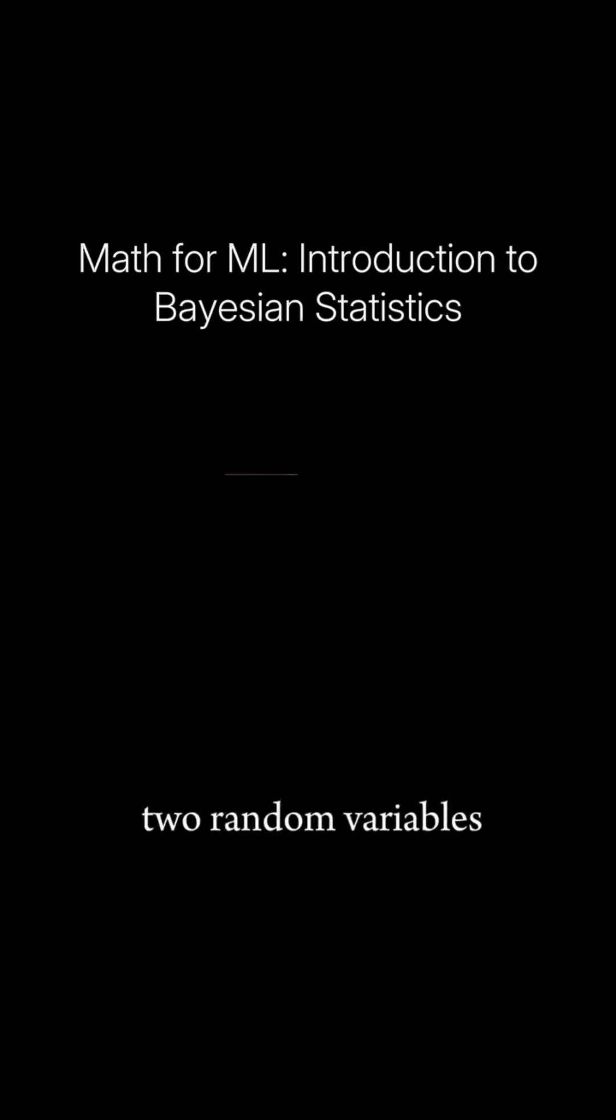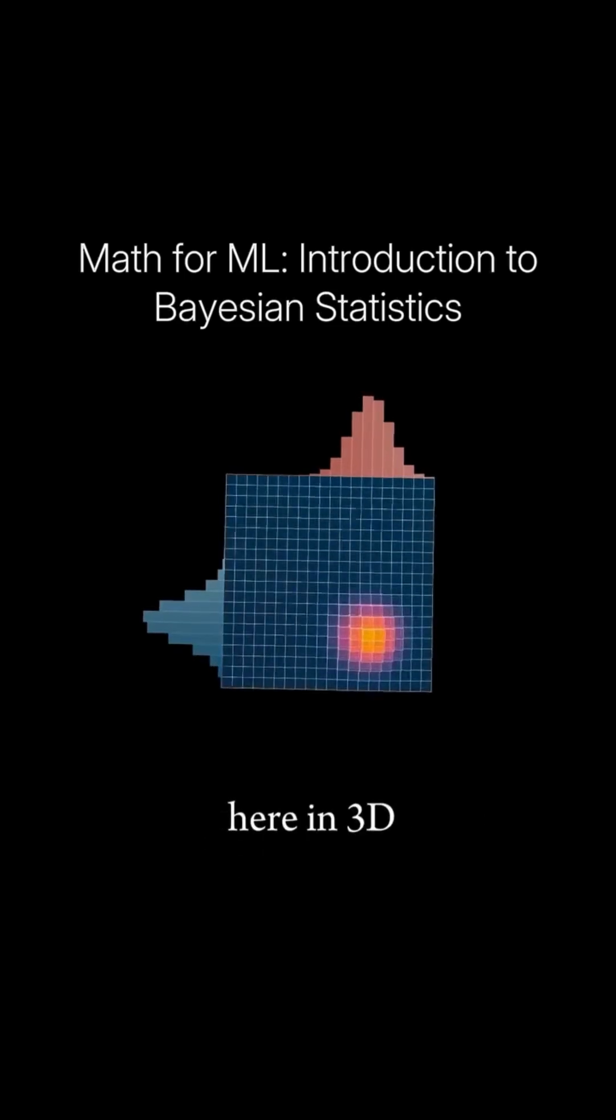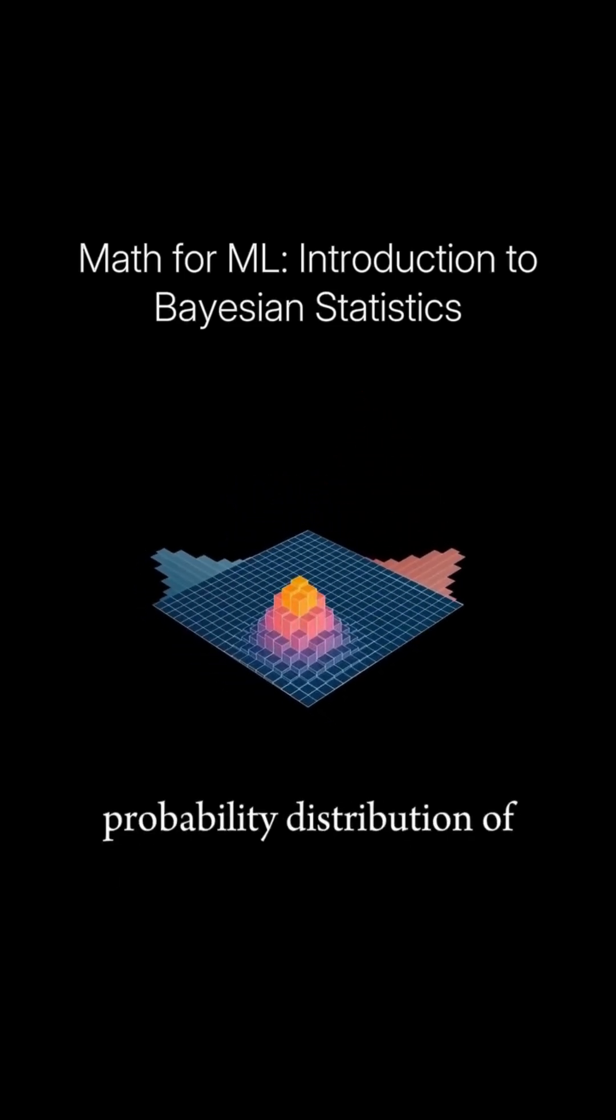Now let's consider two random variables, x and z. What you see here in 3D is what we call the joint probability distribution of x and z. This represents the probability of each possible pair of events occurring together.